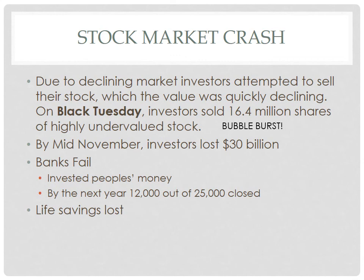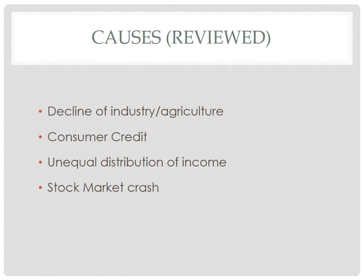People were losing their personal money through stocks and through banks' investments in the stock market. To review the four causes: decline of industry and agriculture; consumer credit creating false prosperity; unequal distribution of wealth creating a false sense of economic success; and finally, the stock market decline — people bailing out of their shares and banks failing — which burst the bubble.